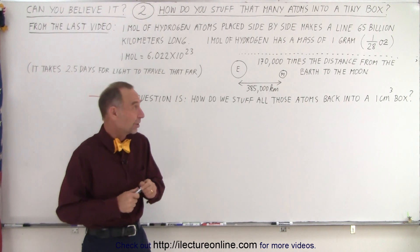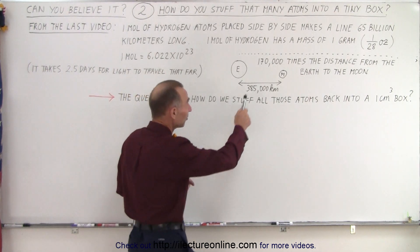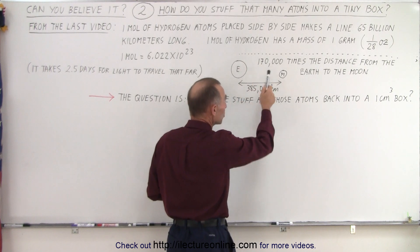Now how far is 65 billion kilometers? Well, it's about 170,000 times the distance from the Earth to the Moon.